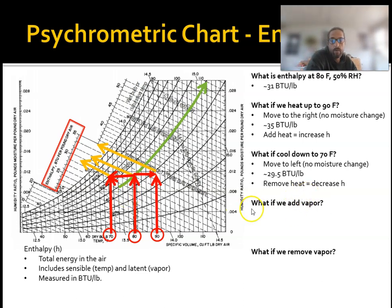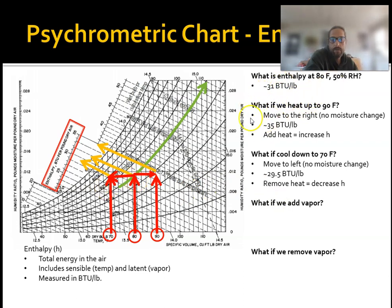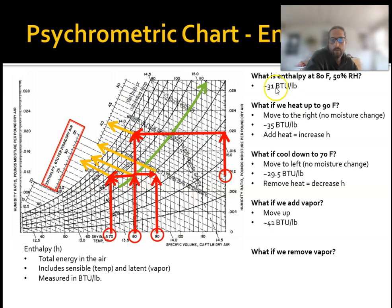What about vapor? Let's look at it on the chart. More vapor means more enthalpy because there's more latent heat. Here is our absolute humidity on the right-hand side. Let's see what happens when we add vapor — we just go straight up. Our starting point is still 31 BTUs per pound at 80°F and 50% relative humidity. Moving up, we're now at about 41 BTUs per pound. We didn't change the dry bulb temperature — we just added moisture and increased the enthalpy.